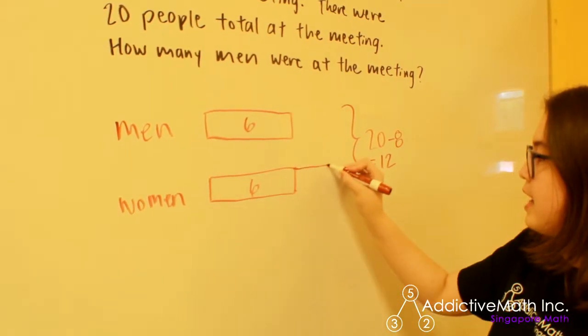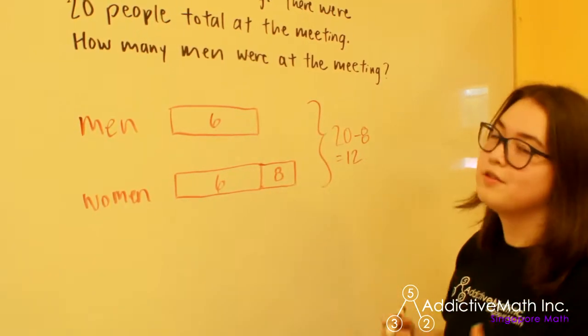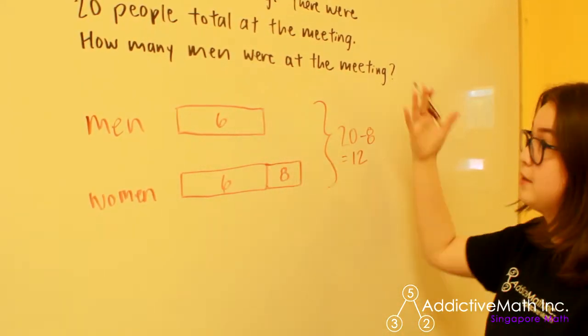Let's redraw the diagram the way we had it before. And now we've solved for the quantity of men and women. So there are six men, which is what they're asking.